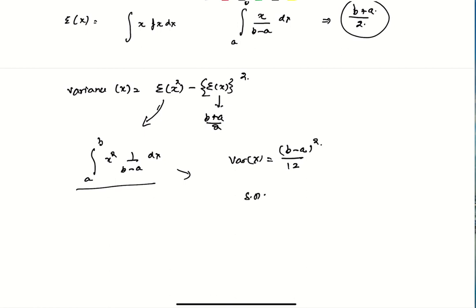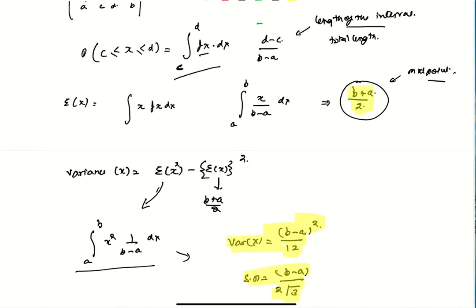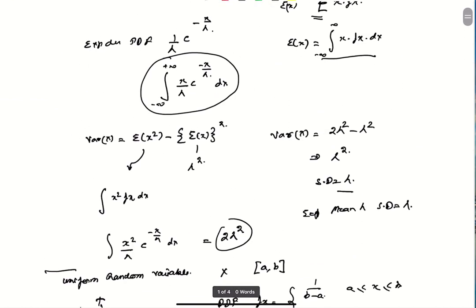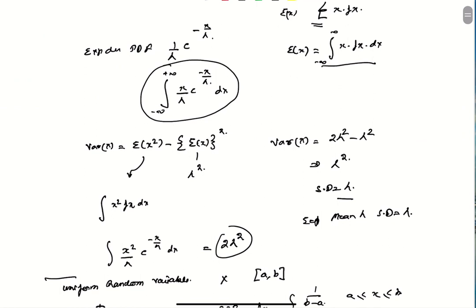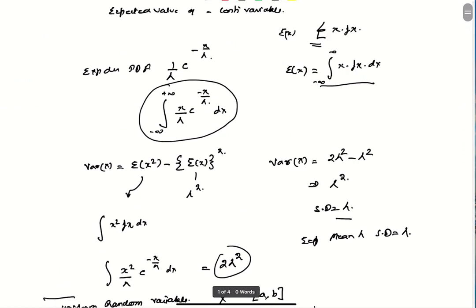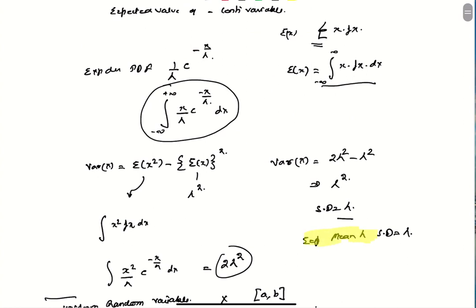Using calculus, the variance of x for a uniform distribution works out to (b−a)²/12, and the standard deviation is (b−a)/√12. So to summarize: for a uniform distribution, E[x] = (b+a)/2 and Var(x) = (b−a)²/12. For an exponential distribution, the expected value is λ and the standard deviation is also λ.